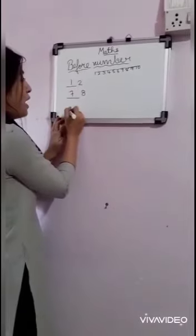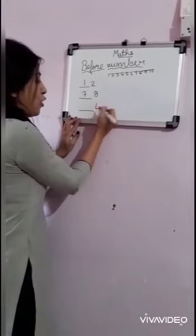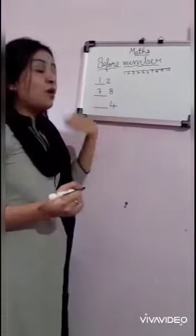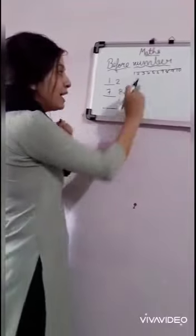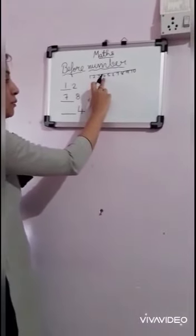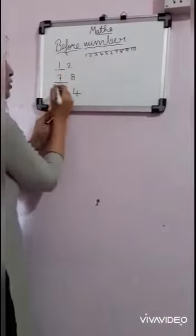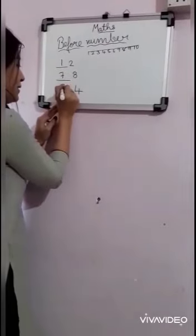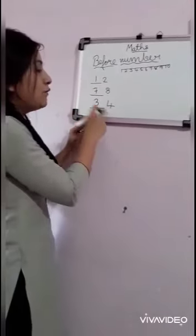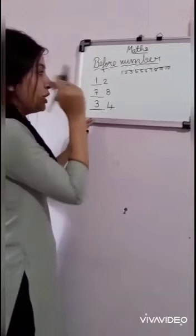Now I will write dash 4. So before 4, which number will come? Here you see — before 4, which number is there? 3. So I will write it 3. So before 4, 3 will come.